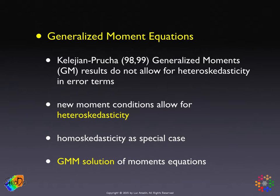One limitation of the generalized moments approach was that it did not provide for an asymptotic variance matrix for the nuisance parameter — the spatial autoregressive parameter — and it also did not allow for heteroscedasticity. It was a very elegant solution in that it set up a set of moment equations which were solved and yielded a consistent estimate for the nuisance parameter, and that's really all we need to then carry out feasible generalized least squares. However, the lack of robustness to heteroscedasticity is a real problem.